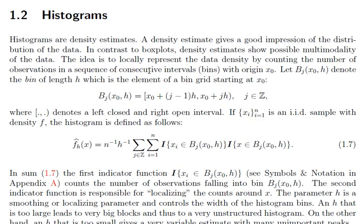Histograms are the first thing that come to mind — they are basically density estimates and give a very good impression of the distribution of a dataset. In the case of box plots, we understand the extremities of the data, whether there are outliers, and the location of the median, which gives some idea about skewness. But when it comes to talking about densities, histograms give us a simple measure to gauge the variation in the data.